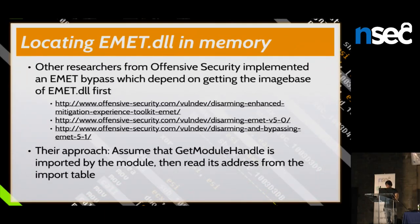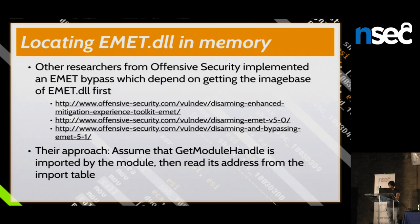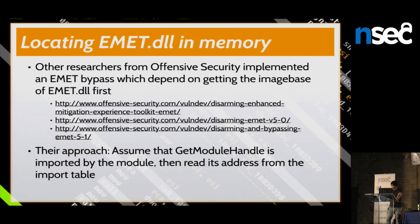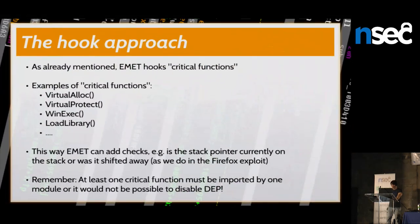Other researchers from Offensive Security also implemented EMET bypasses and also required finding EMET DLL in memory first. I recommend their three blog posts. Their technique assumed the attacked module imported getModuleHandle — they just called it with argument 'EMET' to get the image base. But for Firefox, getModuleHandle was not imported by any module, so I had to develop my own approach: the hook approach.